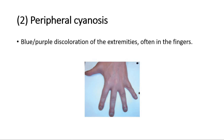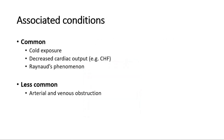Next, we will look at peripheral cyanosis, which is blue and purple discoloration of the extremities, often in the fingers. Peripheral cyanosis is commonly associated with cold exposure, decreased cardiac output such as in congestive heart failure, and Raynaud's phenomenon. Another less common cause is arterial and venous obstruction.